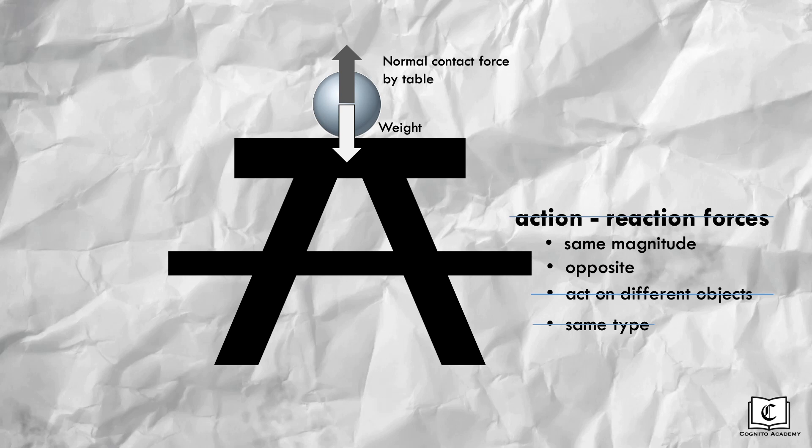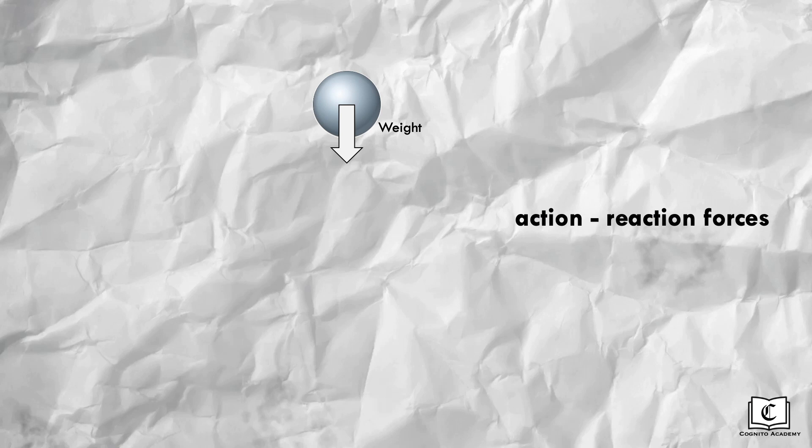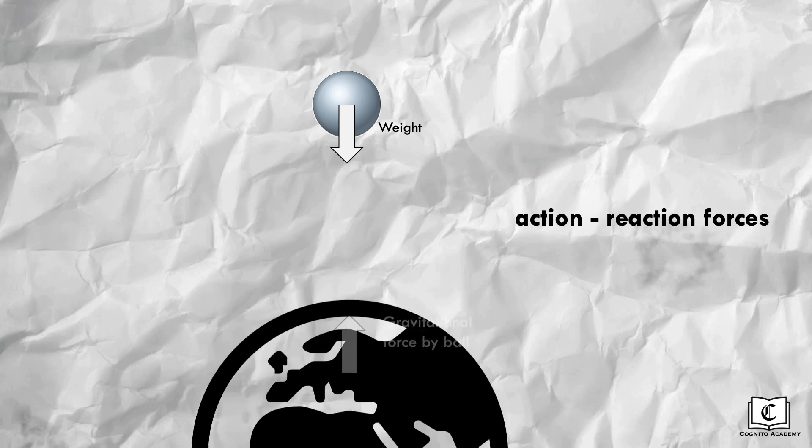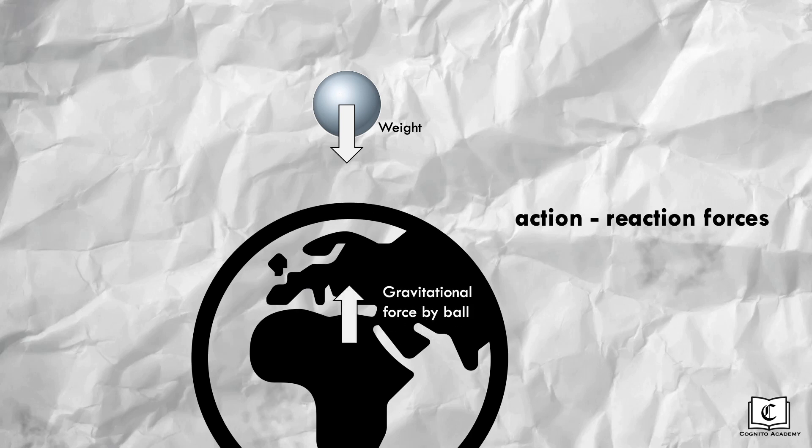Weight of the ball is essentially the gravitational force acting on the ball by the earth. So the reaction force would just be the gravitational force acting on the earth by the ball. Both forces are similar in magnitude and opposite in direction. They both act on different objects as well. One gravitational force acting on the ball, which is the weight of the ball, and the other gravitational force acting on the earth. They are both the same type of forces as well, with both being gravitational forces.